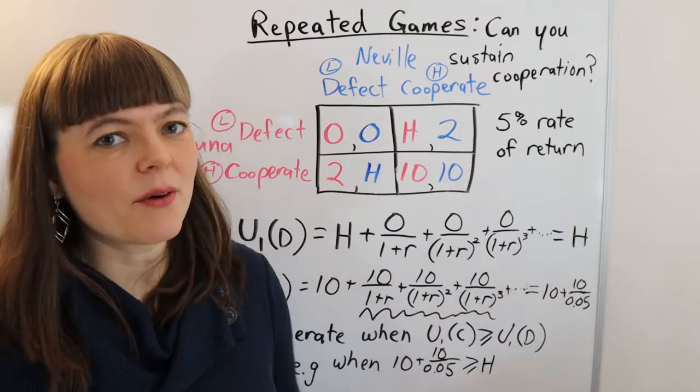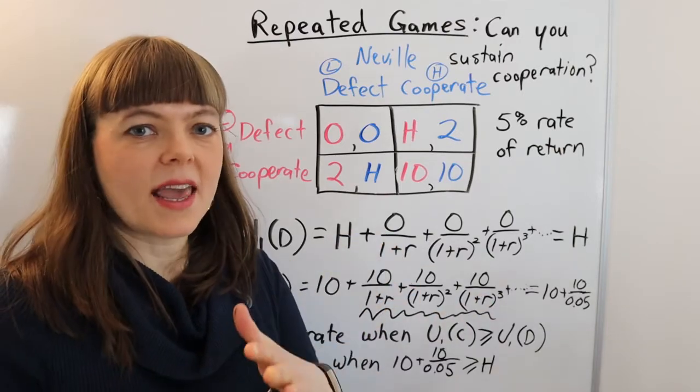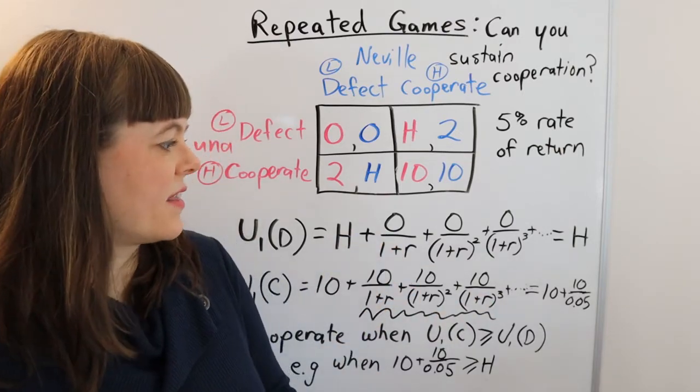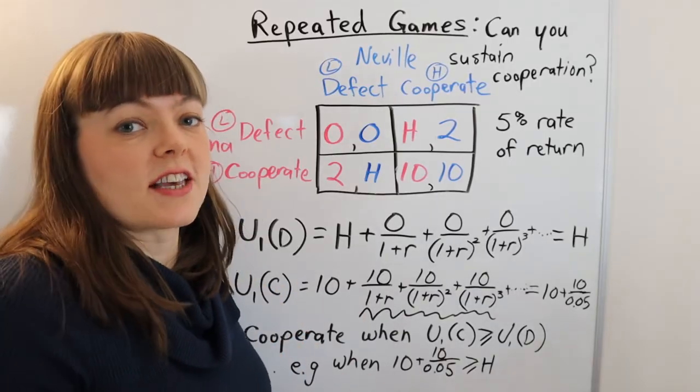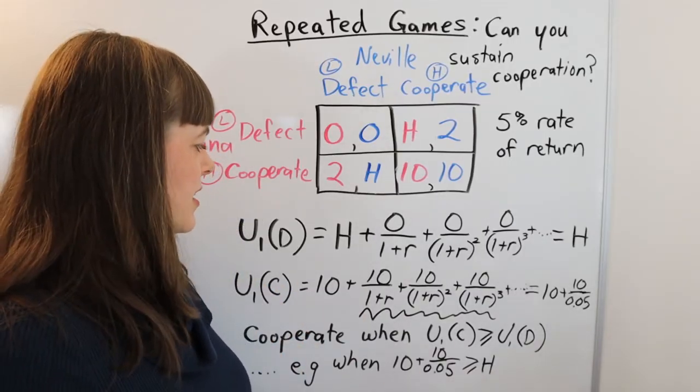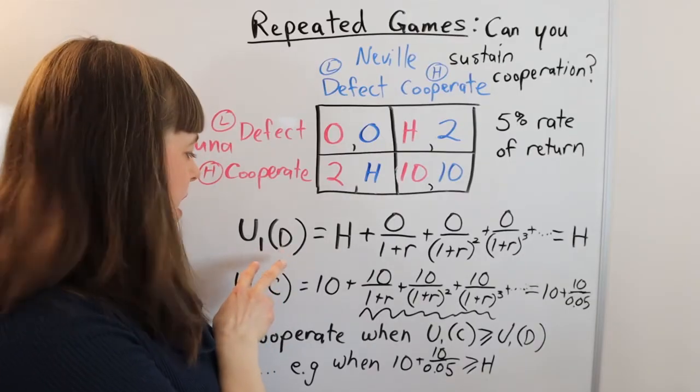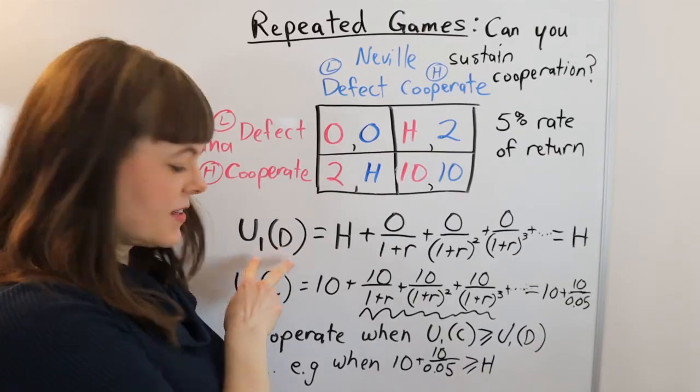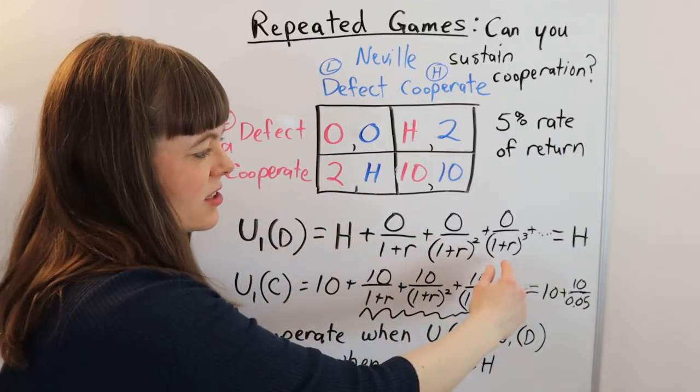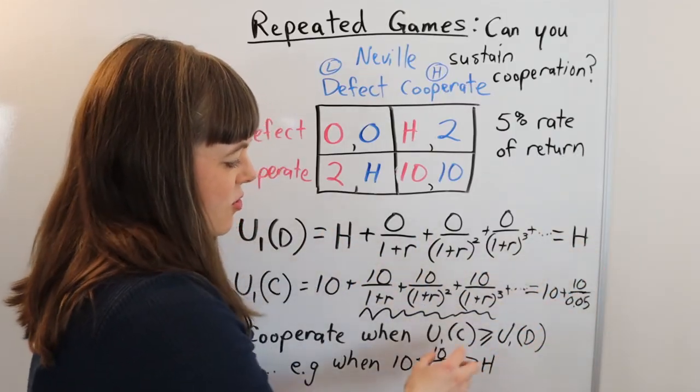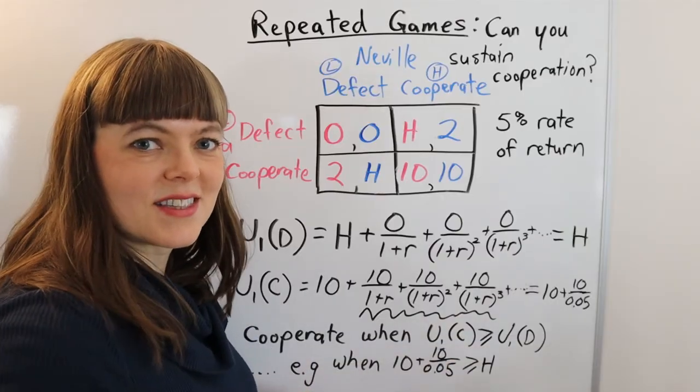So that's basically how you approach repeated games problems. And the key here is that you need to specify a strategy such as the grim trigger strategy. And then you specify, what would I get if I defected? What would I get if I cooperated? You use the little formula to solve that and you compare the utilities. That's the approach.